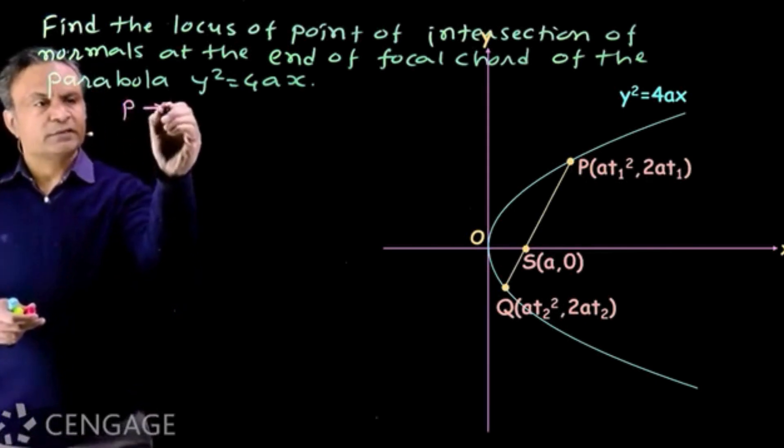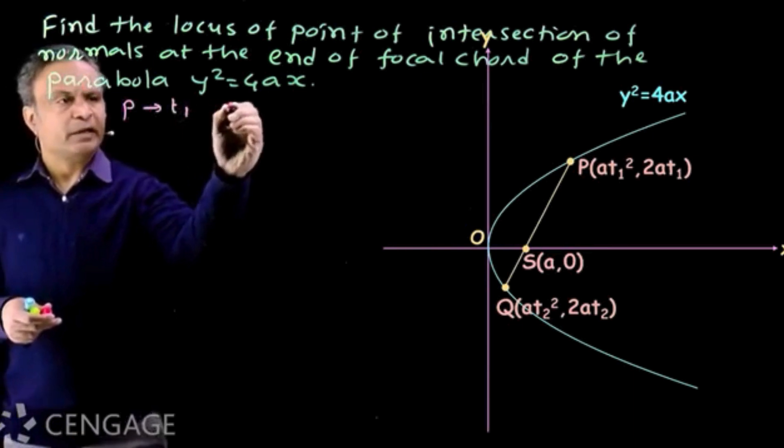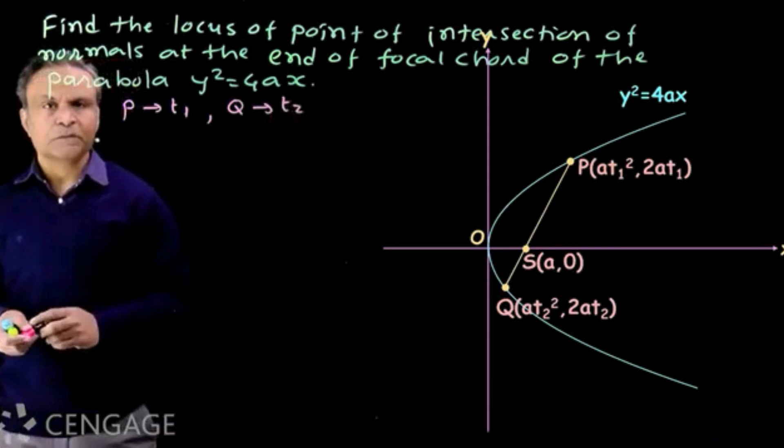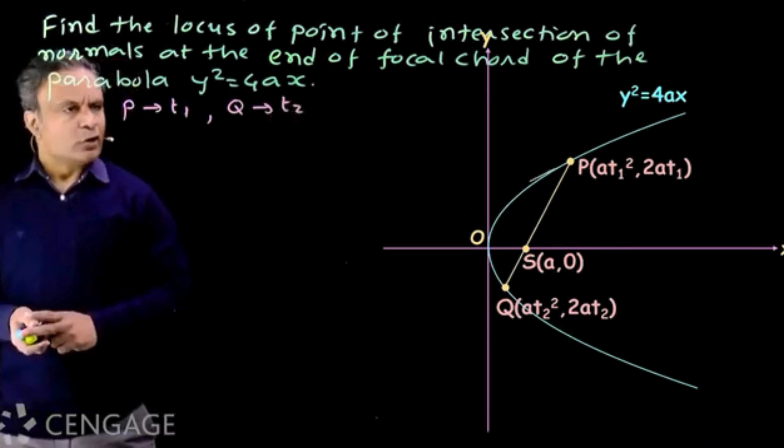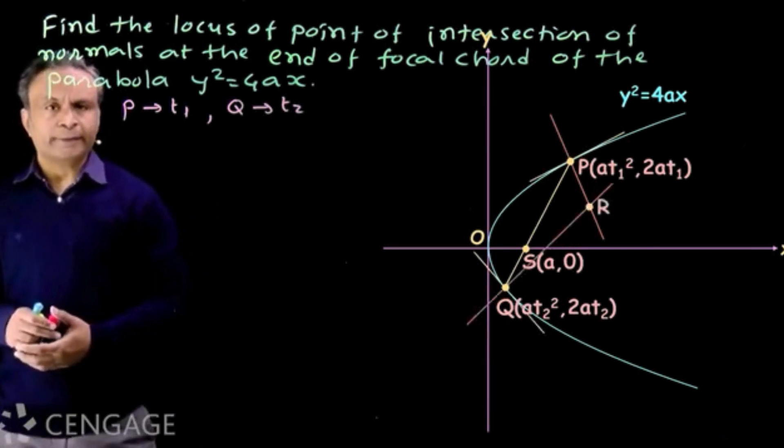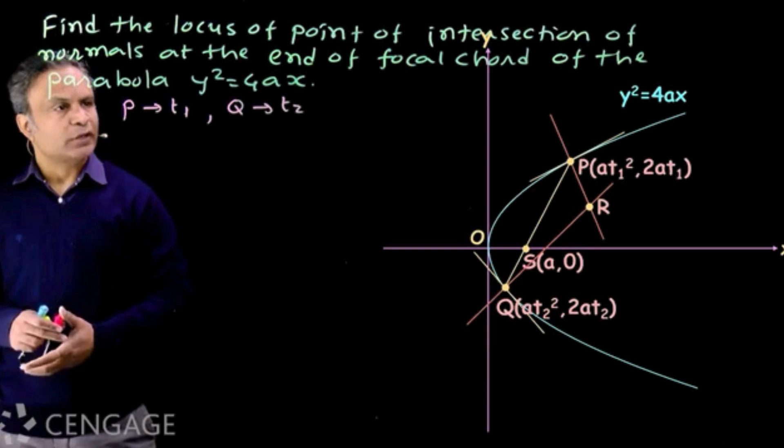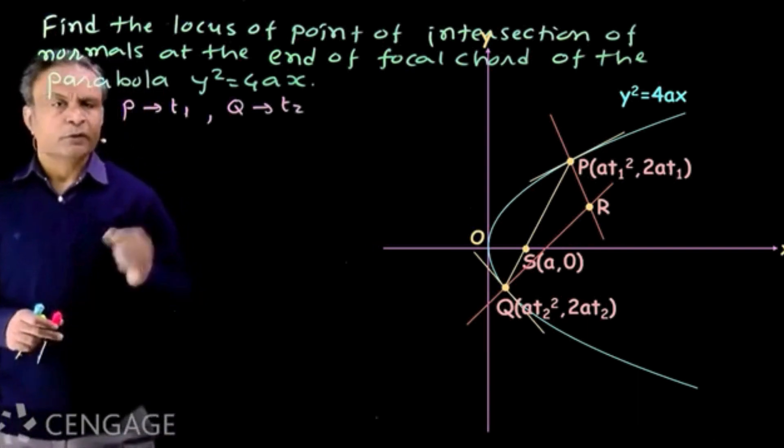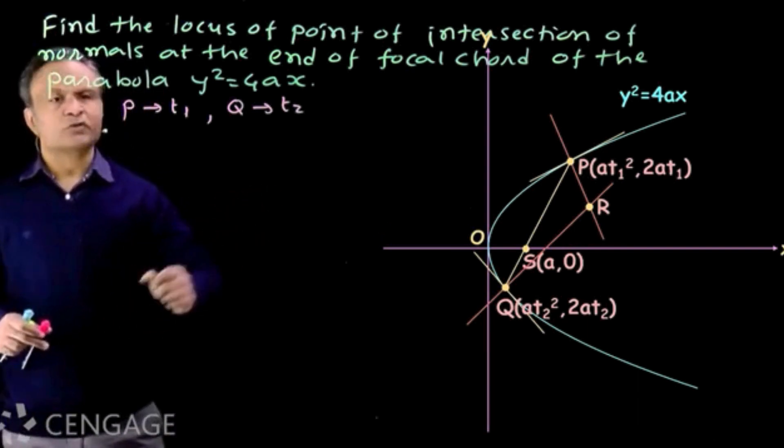Suppose parameter of point P is t1 and parameter of point Q is t2. Now we draw normals at points P and Q which intersect at point R. Here points P and Q are variable points, so point R will be also variable point. We have to find the equation of locus of point R.